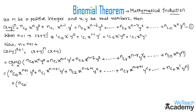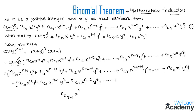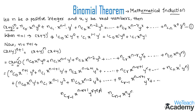Multiplying y with the group: nC0 · x^n · y^1 + nC1 · x^(n-1) · y^2 + nC2 · x^(n-2) · y^3 + ... The previous term of the general term is nC(r-1) · x^(n-r+1) · y^(r-1). Multiplying y with this gives nC(r-1) · x^(n-r+1) · y^r. Also, the previous term of the nth term is nC(n-1) · x^0 · y^(n-1).